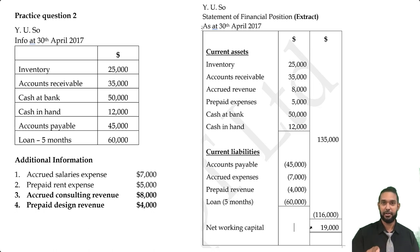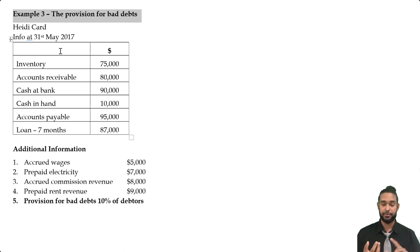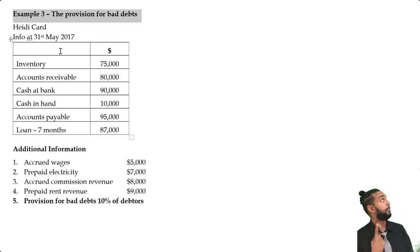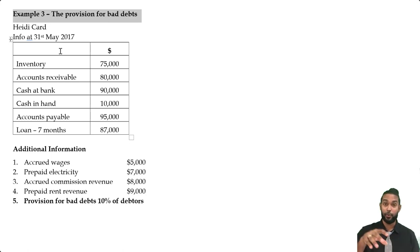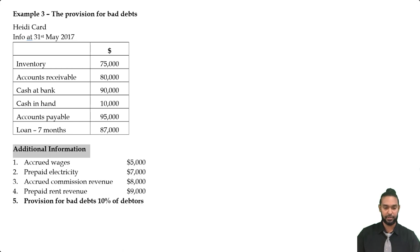Now we're looking at the provision for bad debts — example three. I have a previous video explaining this topic in depth with T-accounts, calculations, and journal entries, linked in the description. Example three is Heidi Card's information at 31st May 2017, with the typical items plus additional information including accrued expenses, prepaid expenses, accrued and prepaid revenue, and a provision for bad debts of 10% of debtors.